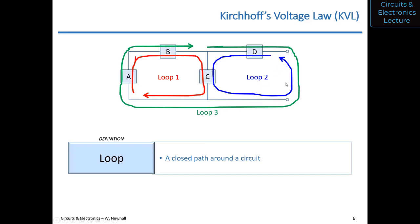To apply KVL, let me define voltages across each circuit element. VA across element A, VB across element B, and so on. I randomly picked polarities — VA has plus on top, VC has minus on top, VD has plus on the right, VB has plus on the left. Once you pick polarities, you have to stay consistent.